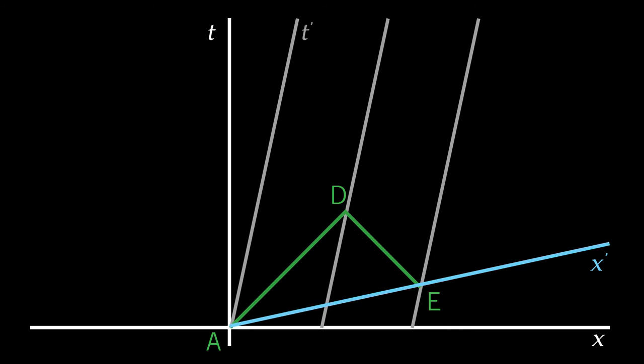Why? Because the x prime axis are all the points that have t prime equals zero. And we know that the origin has t prime equals zero. We set it that way such that when the caboose zero corresponded to the spatial position of the station zero, we set their clocks to be zero at that moment.